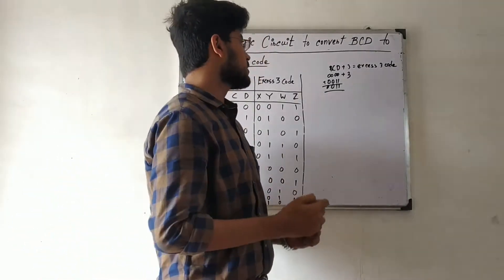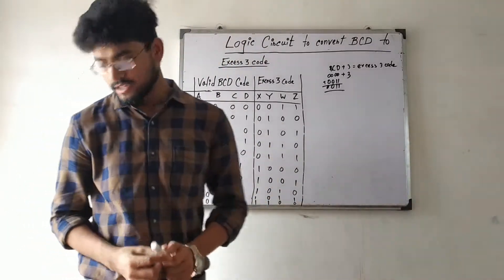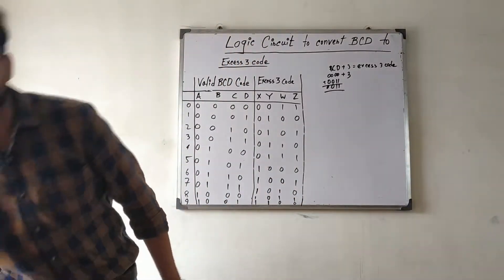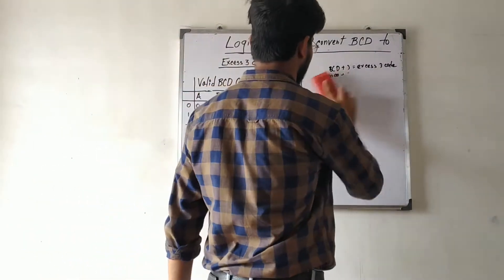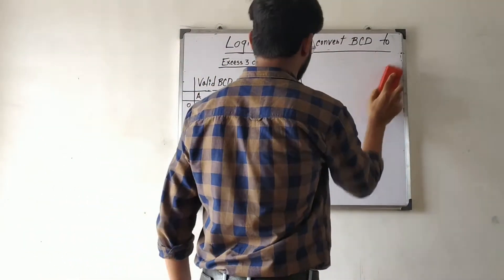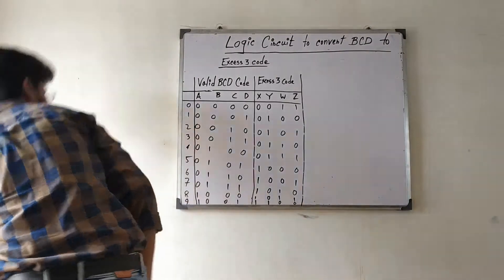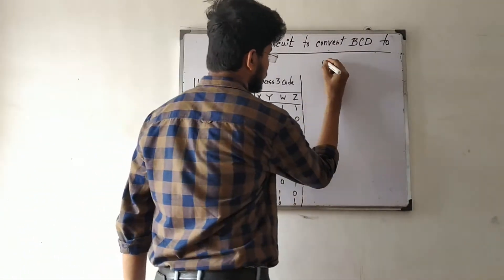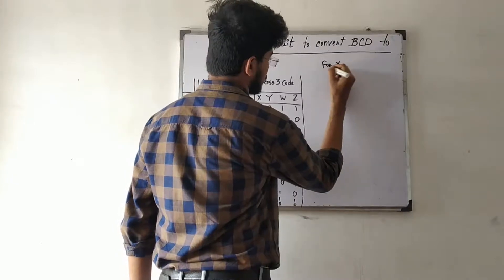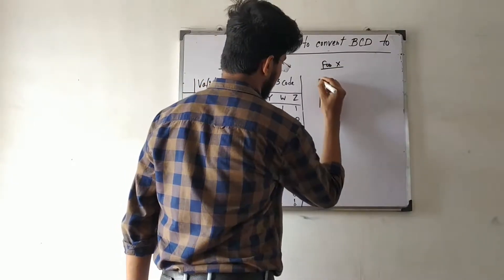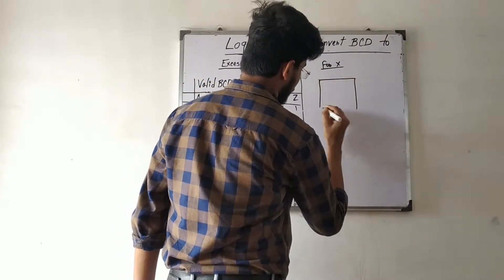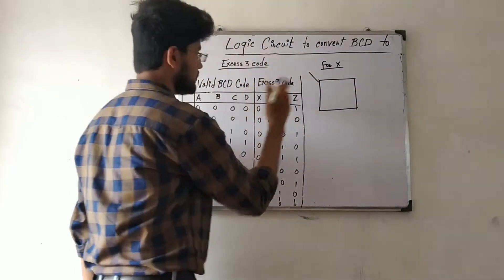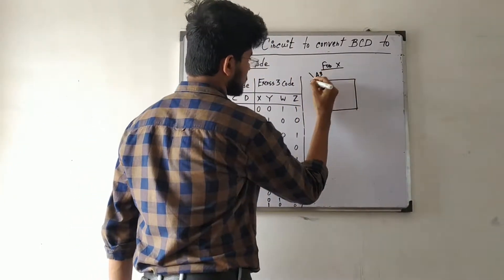Now we will make the logic circuit that converts the BCD code into the Excess-3 code by using the K-map, in a similar process. First we have to take the K-map for the X output. The axes of the K-map are AB and CD.